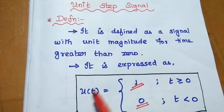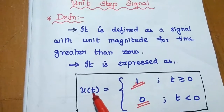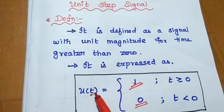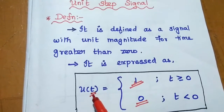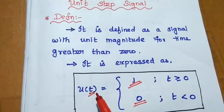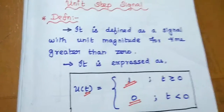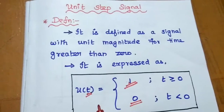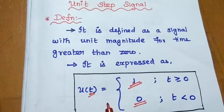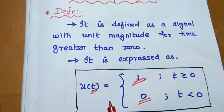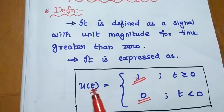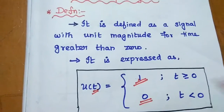Here the signal is represented in terms of T. T means continuous time. So this is the unit step signal in terms of continuous time.